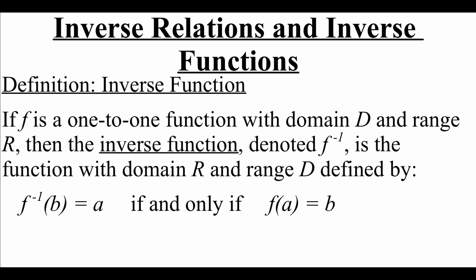So as far as an inverse function, if f is a one-to-one function — meaning that it passes the horizontal line test — with a domain of D and a range of R, then the inverse function, denoted with an f with a little negative one power on it, is the function with domain R and range D. Notice that the domain and range values are interchanging places: we started with a domain of D and a range of R, but then those changed to a domain of R and a range of D.